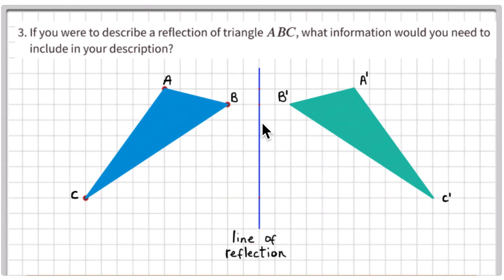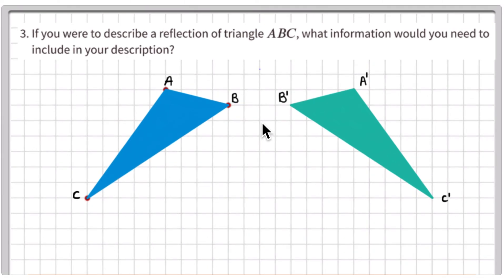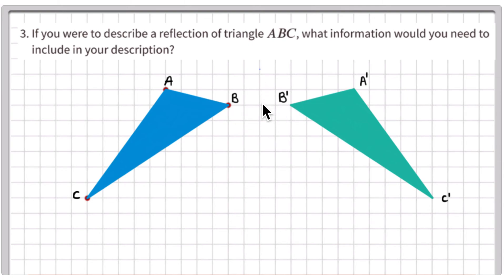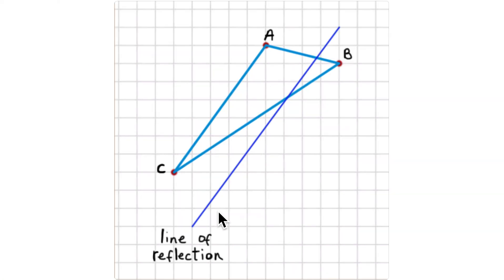Shade it in and remove the construction lines. A prime B prime C prime is a reflected copy of ABC. If you're given both images and asked to find the line of reflection, connect the corresponding points and find the midpoint of each segment — that's the perpendicular bisector. Each midpoint will lie on the line of reflection.